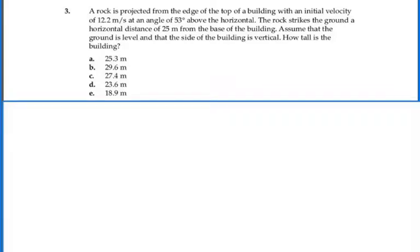Now let's look at problem number three in chapter four. It says a rock is projected from the edge of the top of a building with an initial velocity of 12.2 meters per second at an angle of 53 degrees above the horizontal. The rock strikes the ground a horizontal distance of 25 meters from the base of the building. Assume that the ground is level and the side of the building is vertical. How tall is the building?